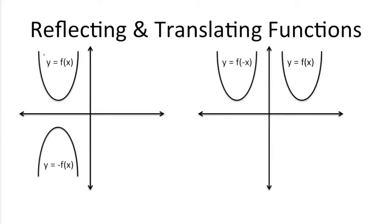In order to reflect this graph on the left over the x-axis, all you need to do is run a negative through the outside of a function. And as you can see here, in order to reflect a graph over the y-axis, all you need to do is run negatives through the values inside the parentheses of the f of x. So in this case, f of negative x.